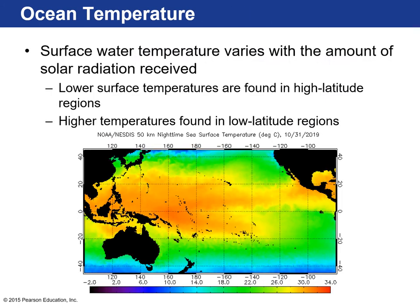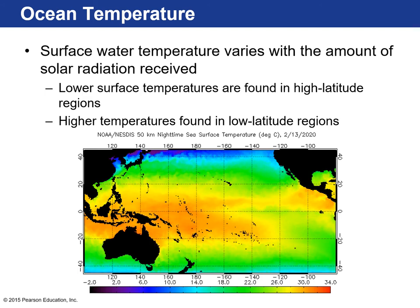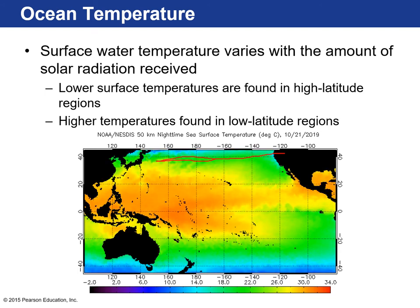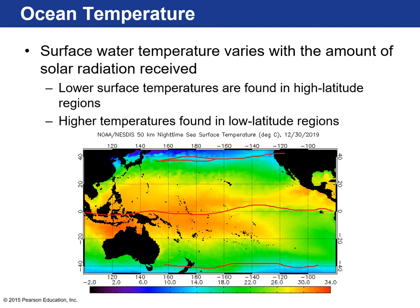Ocean temperature varies as well, based on how much solar radiation is received. Lower surface temperatures in the open ocean are found at high latitudes — areas far from the equator. At low latitudes, close to the equator, you find the highest surface temperatures.